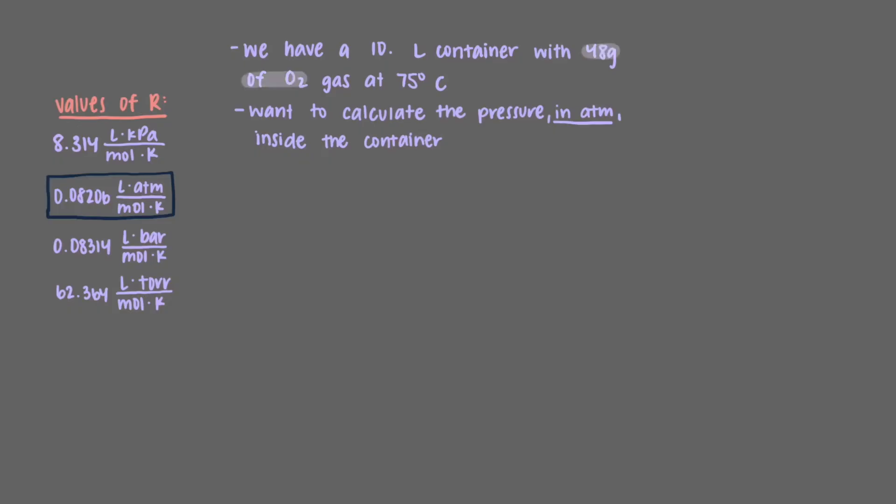We are given the amount of O2 in grams, so we must convert it to moles first. By using the molar mass of O2 as the conversion factor, we get that 48 grams of O2 is 1.50 moles. We'll keep an extra significant digit to avoid round-off error in our final answer.